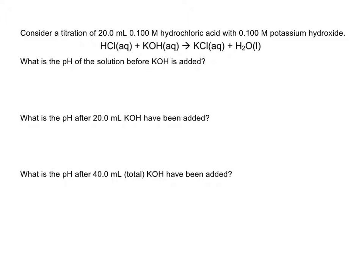What's the pH of the solution before KOH is added? We're only thinking about the pH of the hydrochloric acid solution at the start. Since hydrochloric acid is a strong acid, the concentration of HCl equals the concentration of H₃O⁺, because all of it reacts. So pH = −log[HCl] = −log(0.1) = 1. This is a very acidic solution, as you'd expect from a strong acid.